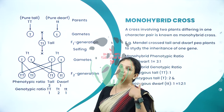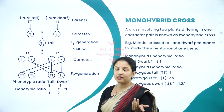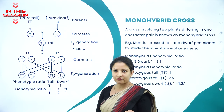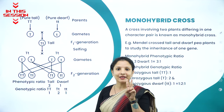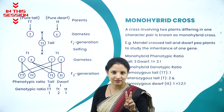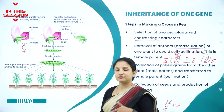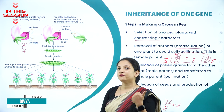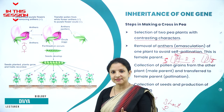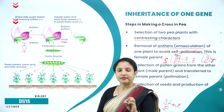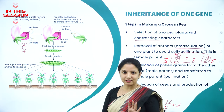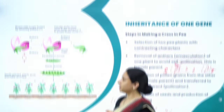He took genes responsible for the height of the plant as well as for the color of the plant — we'll call it a dihybrid cross because two characters are being considered here. Bisexual flowers means both the male and the female reproductive structures will be present in the same flower — that is, the androecium and the gynoecium will be present in the same flower.